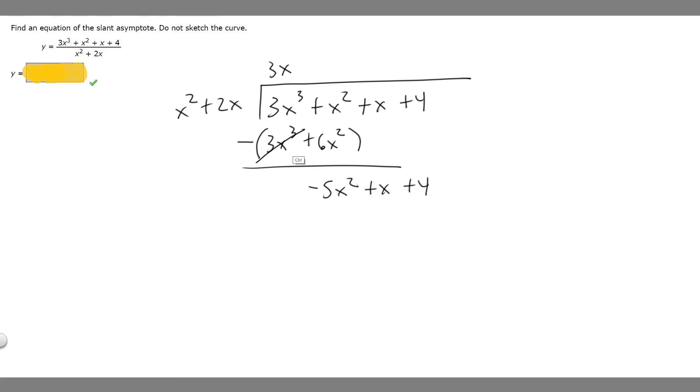Then we can keep dividing. So how many times does x squared go into minus 5x squared? Well, minus 5 times x squared is minus 5x squared. So minus 5.